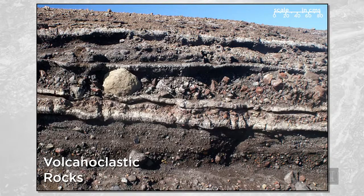Here's an example of a clastic rock formed by volcanic processes — we can call it a volcaniclastic rock. Each of these pieces here is a fragment that's been shot out of a volcano, and they've accumulated in layers. Later, cements formed by precipitation of other minerals from water passing through the spaces between the grains held those grains together so that it's now a coherent mass.